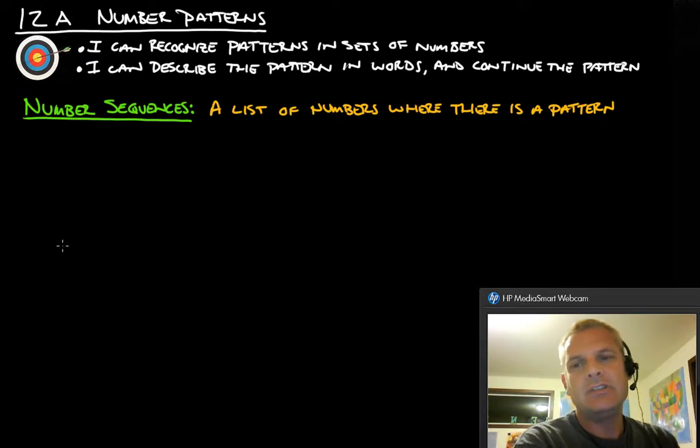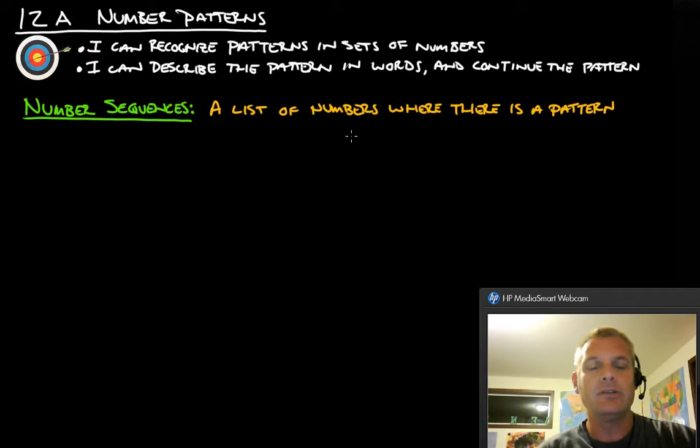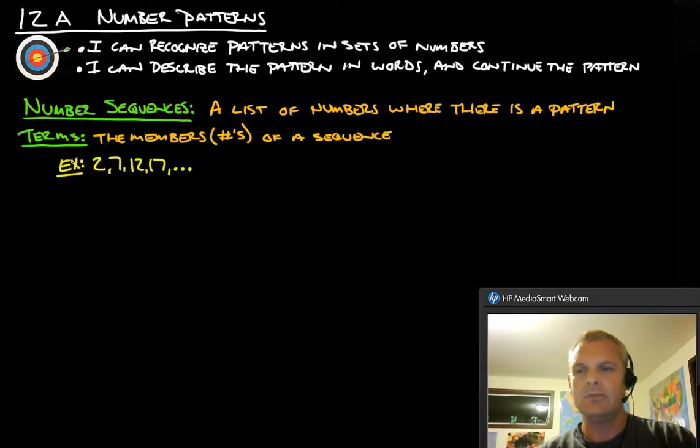First thing, we need to know what a number sequence is. A number sequence is just a list of numbers where there is a pattern. Terms are the members or the numbers of a sequence. For example, 2, 7, 12, 17 are all the terms in a number sequence.